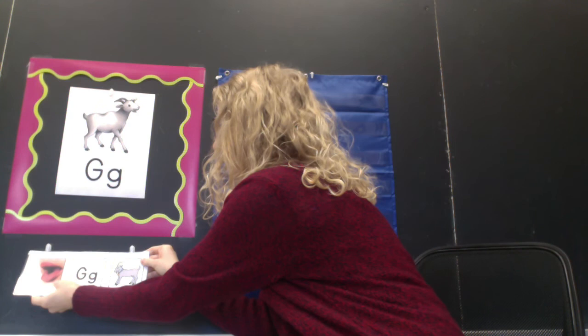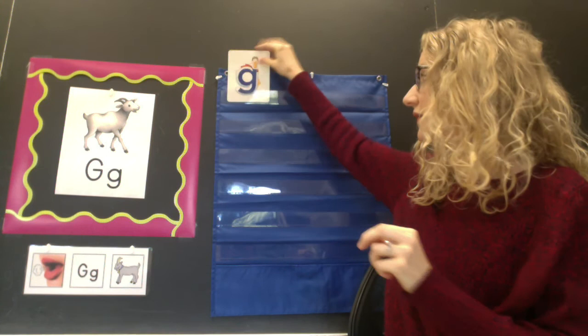My motion for the letter G is a goat. You can pretend like you have two little horns on your head. G, g, g. It just helps me remember the sound a lot easier. Our alpha friend for this week is Gertie Goose.